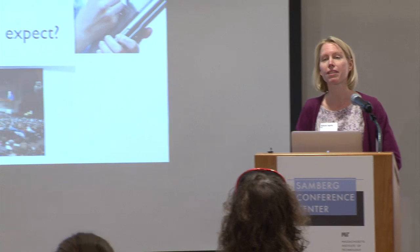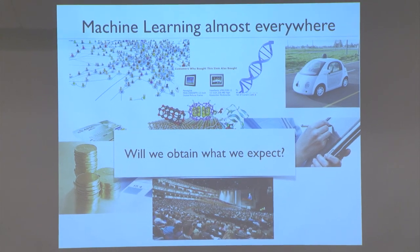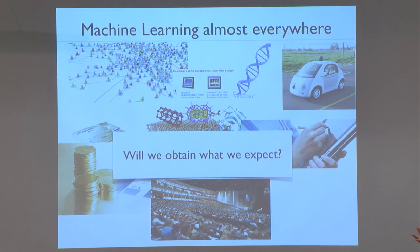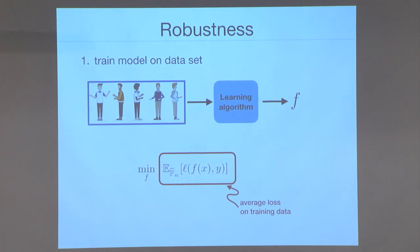So what is this talk about? It's about robustness in machine learning. The motivation — I think I don't need to motivate it much in this workshop — is that we have data from all over the place. If we deploy machine learning in the real world, we want to make sure we understand what the model will do if the data changes a little bit under perturbations. Let me make this semi-formal.